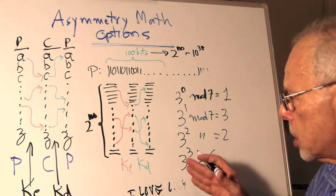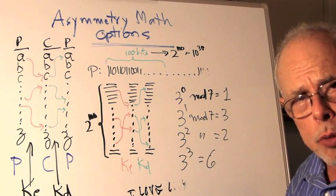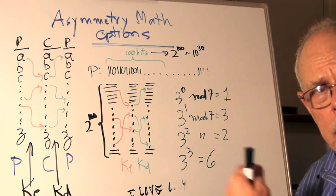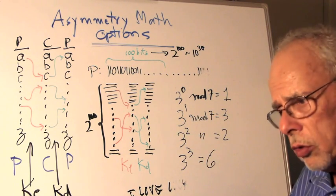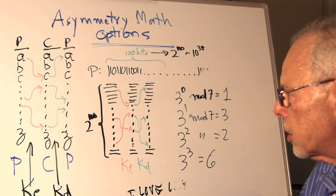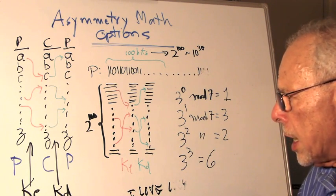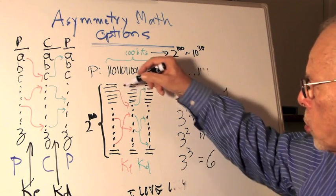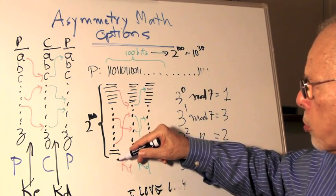And we can use this property of modular power or modular algorithms and create a situation that will allow us to take a field of 2 to the power of 100 options.